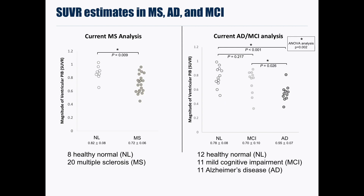We are now looking at standard uptake value ratios of the lateral ventricles from our current multiple sclerosis analysis on the left and our current Alzheimer's and mild cognitive impairment analysis on the right. We found significantly lower lateral ventricular SUVR values in the MS group compared to controls. We also see significantly lower SUVR values in Alzheimer's disease compared to controls and in Alzheimer's disease compared to mild cognitive impairment. Results from ANOVA analysis of the Alzheimer's and mild cognitive impairment data also reveal significant differences between groups.